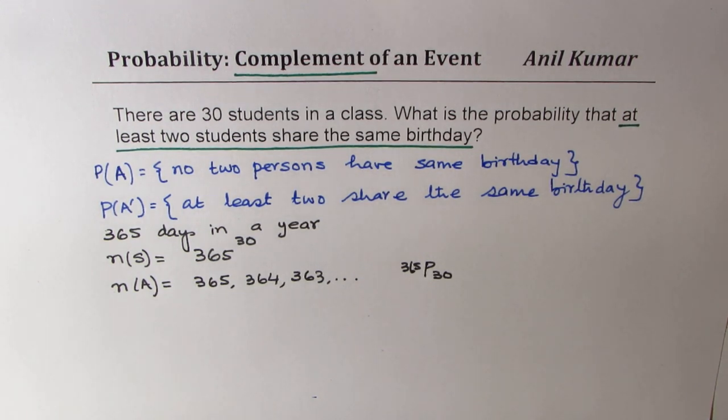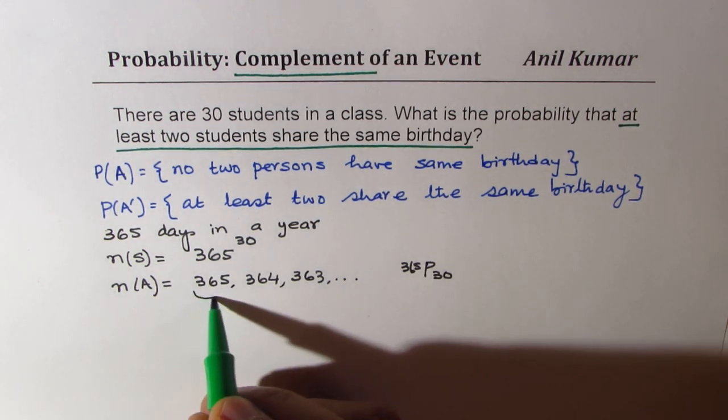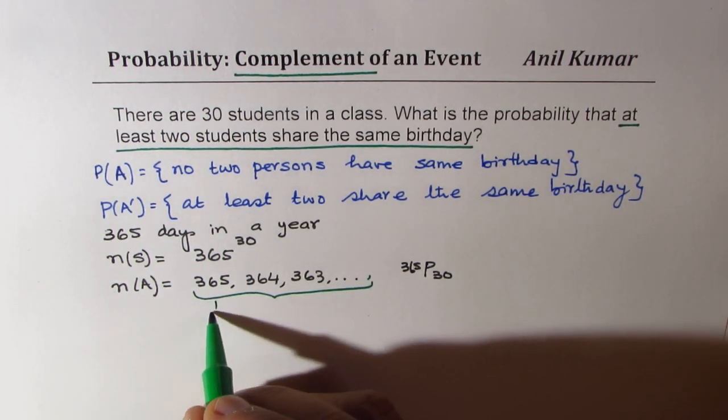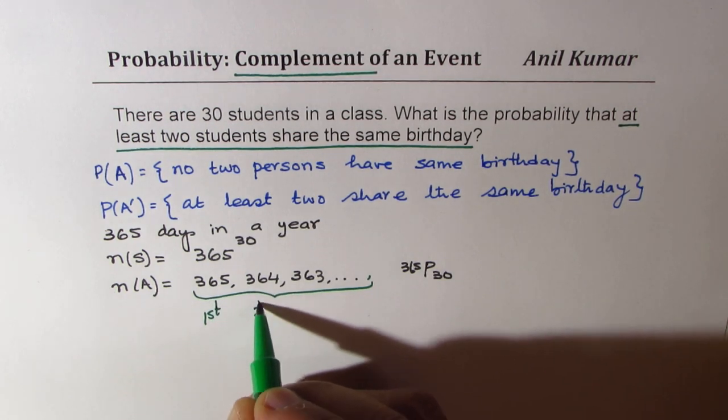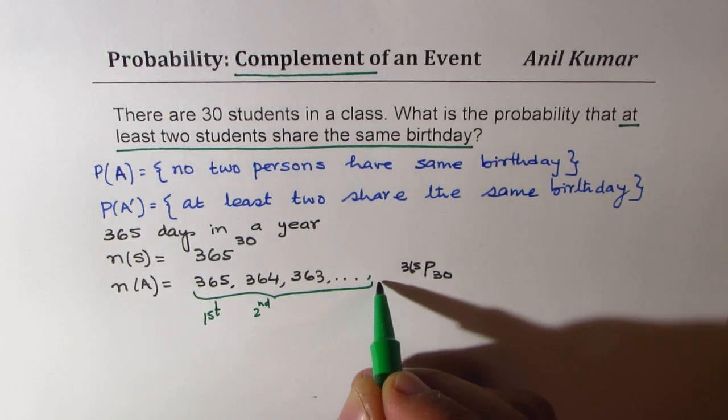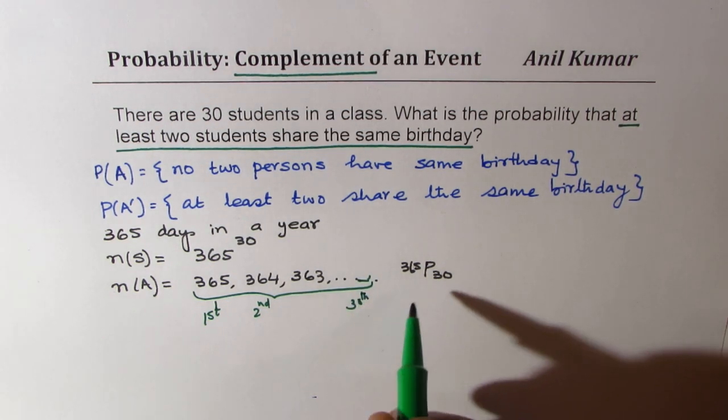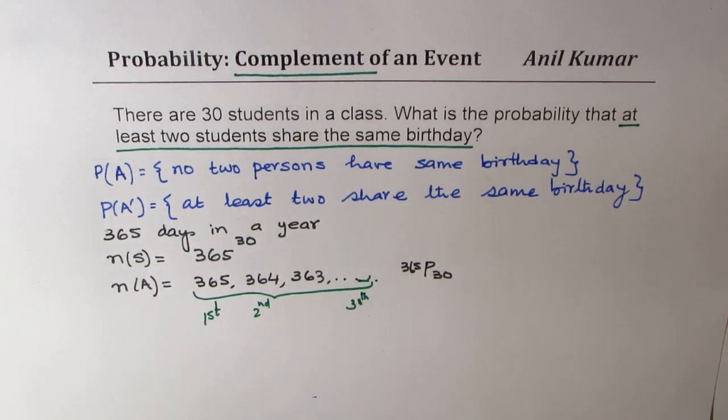So we have choice which will be selected by, so this is the first person, this is the second person, and then at the end we'll have the 30th person. So only 30 days will be selected out of 365.